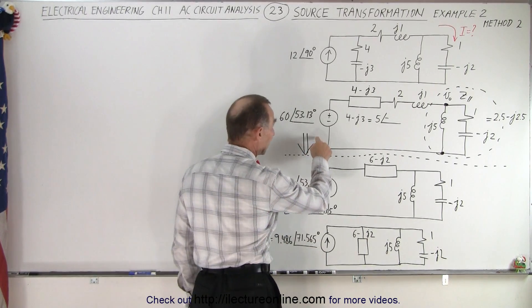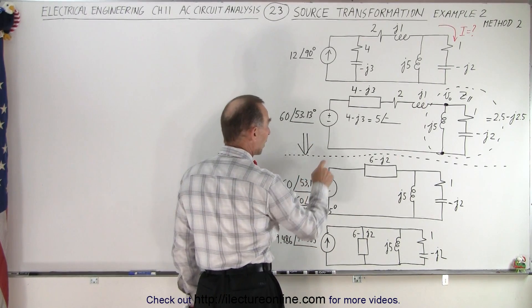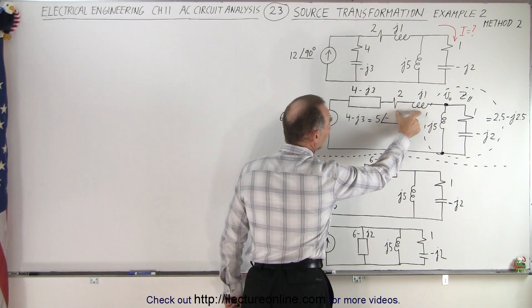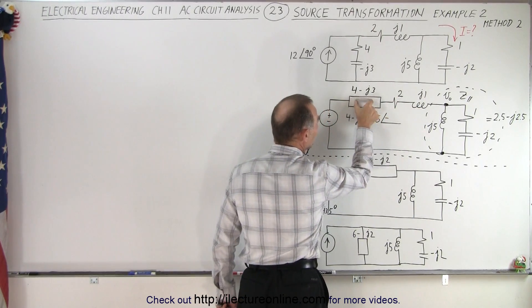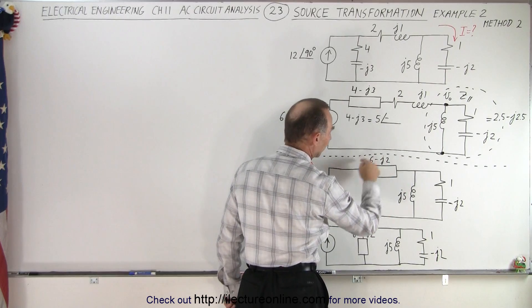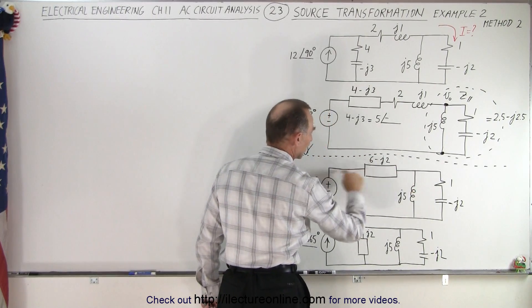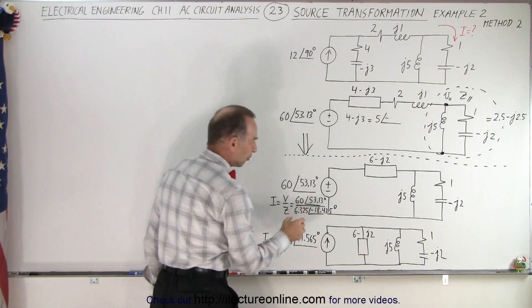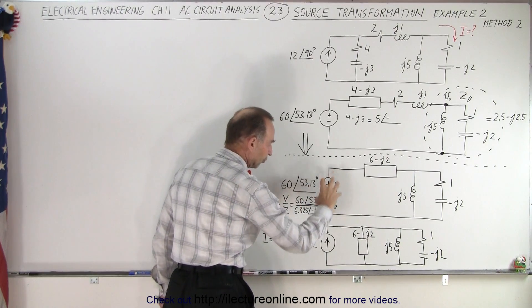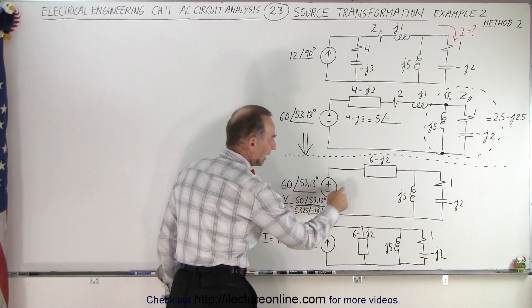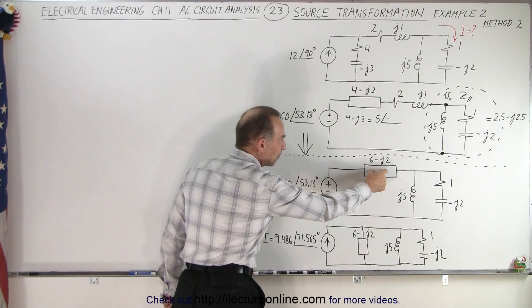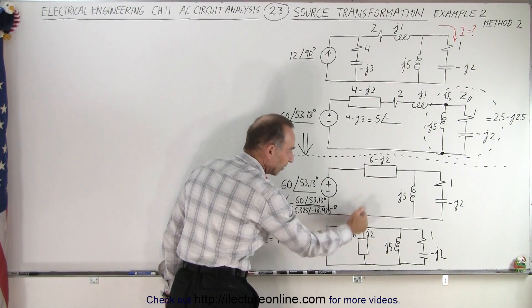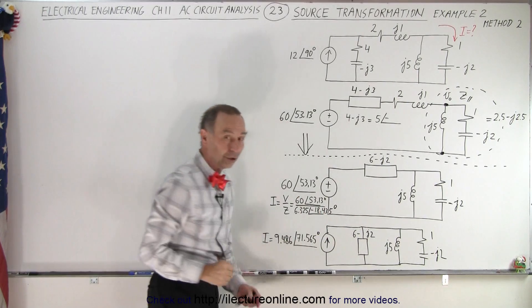What we did here was we went from here to here. Simply what we did was we added these two components to the impedance here to come up with a single impedance along this branch right here. And then we'll use source transformation to turn a voltage source into a current source, and then having the impedance which is in series with the voltage source, converted to the same impedance in parallel with the current source.